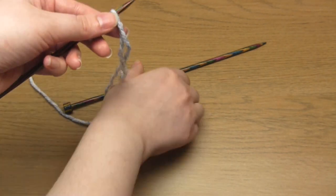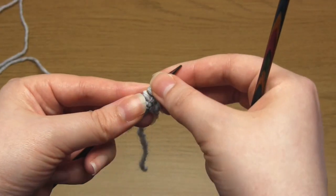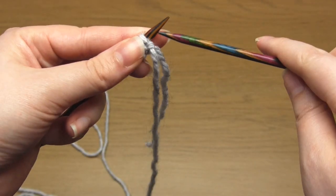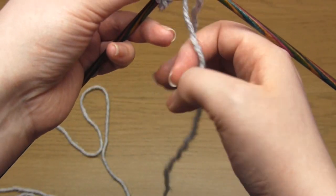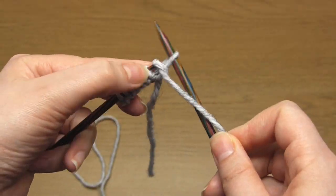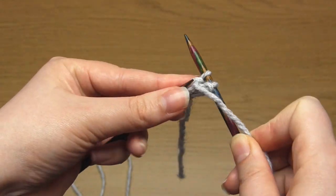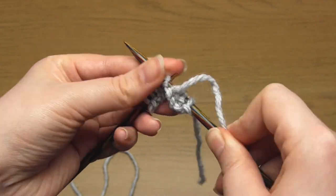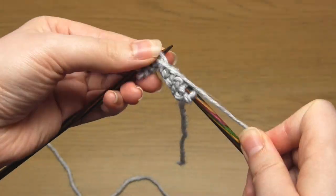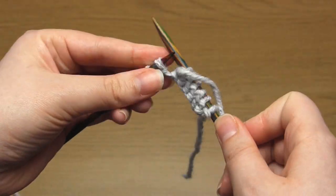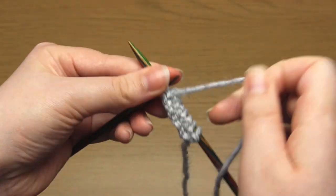For row 1, which represents the wrong side of the knitting, you need to purl across the row. So that's purl 8 stitches. Always remember that the working yarn needs to be at the front of the needles towards you when you're doing purl stitches and behind the needles away from you when you're doing knit stitches.